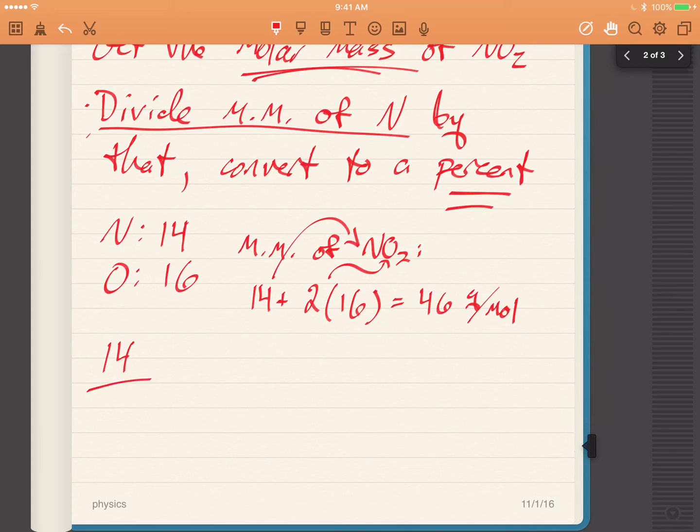The molar mass of nitrogen is 14 divided by 46. So what this is saying is that 14 grams of nitrogen for every 46 grams of nitrogen dioxide. So really we're seeing what part of it consists of nitrogen. Not too bad.